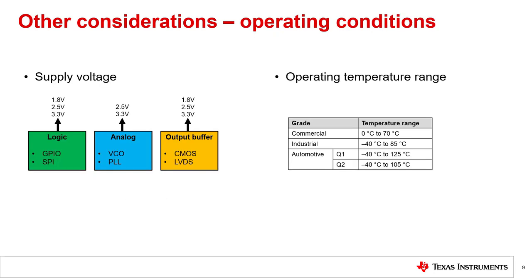Newer clock generator devices typically will support various supply voltages and allow different supply voltages for different functional blocks. Industrial temperature-grade clock generators are very popular as well. For harsh environment applications, TI has automotive-grade clock generators that operate up to 125 degrees C.